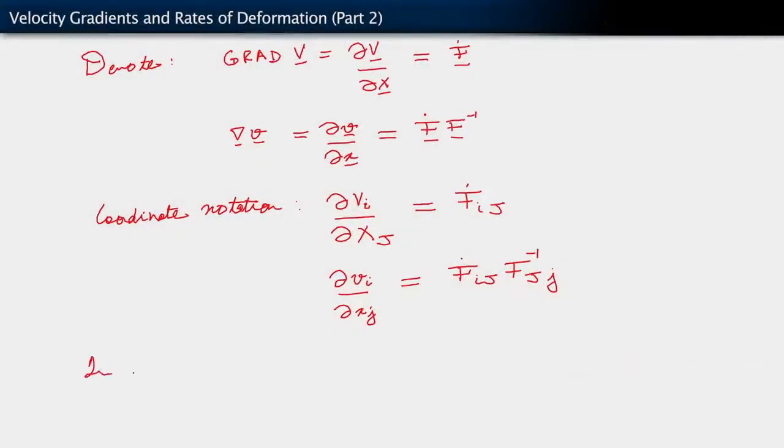Now, in general, neither of these velocity gradient tensors is symmetric. In general, they're both unsymmetric. So, Ḟ, which is this, and Ḟ F⁻¹, which is that, are unsymmetric.